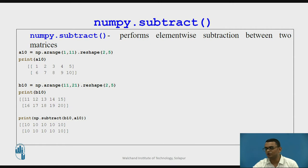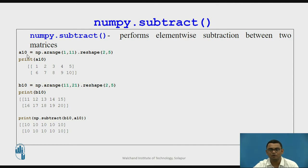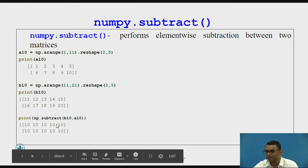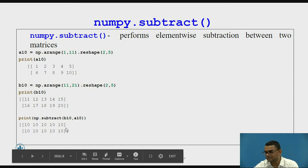Let us look at an example of how two matrices are subtracted. We have matrix A10 with elements from 1 to 10 in shape 2 by 5, and matrix B10 in the same shape. We perform the subtract operation, subtracting elements of A10 from B10. So 11 minus 1 gives us 10, 12 minus 2 gives us 10, and so on — all elements give us the value 10.